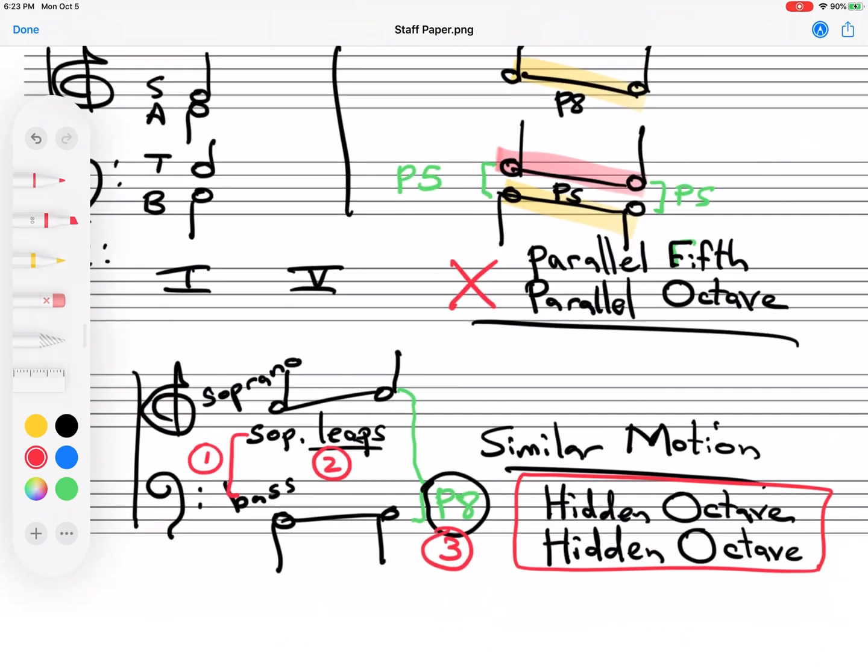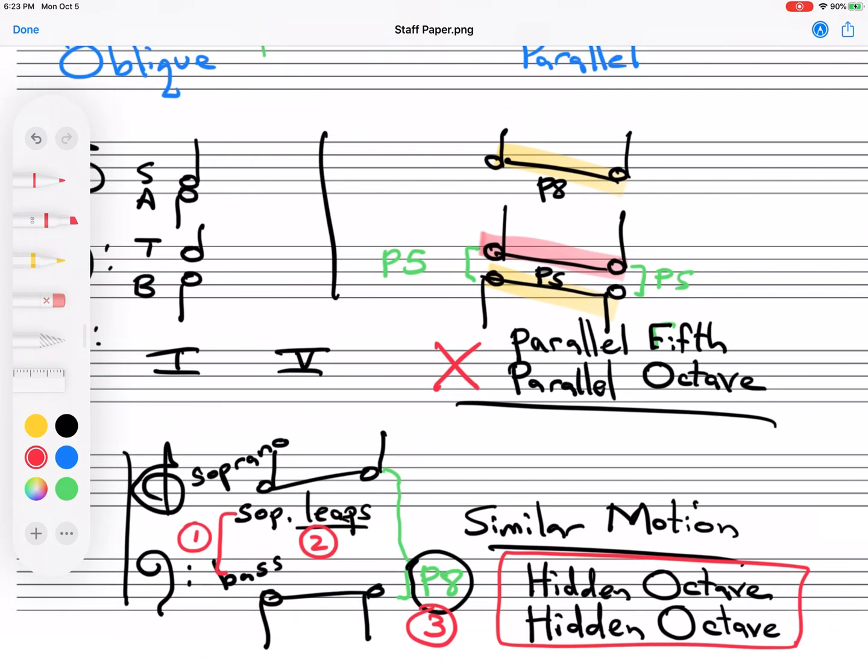Let's look at the last one here. The similar motion, but that leads to a hidden octave. Notice again, the soprano is leaping. And the bass is stepping. But it's ending on an octave. So bass and soprano sounds like this. Actually, it's more likely that. More likely for the soprano to be on a G. So you don't want to do that either.